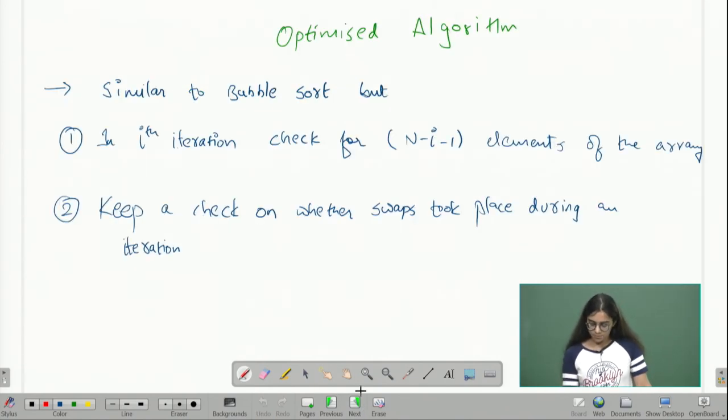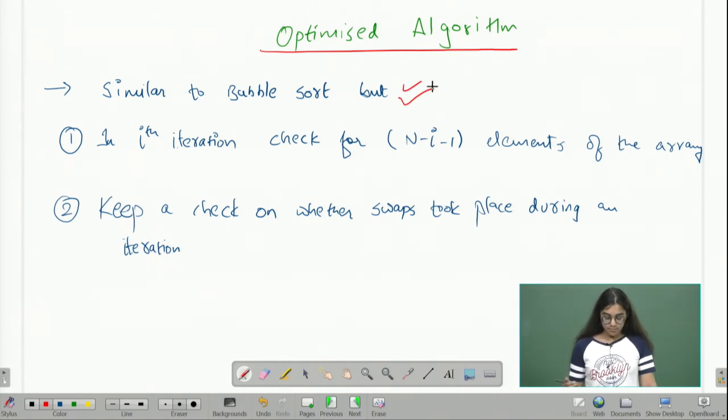Let us look at the optimized algorithm that we can devise from the two observations that we have made. The algorithm will be similar to bubble sort algorithm, but we will make two more additions. In the ith iteration, instead of checking for all the elements, we are going to check for only n minus i minus 1 elements of the array, because I know that the last few elements of the array have already been sorted.